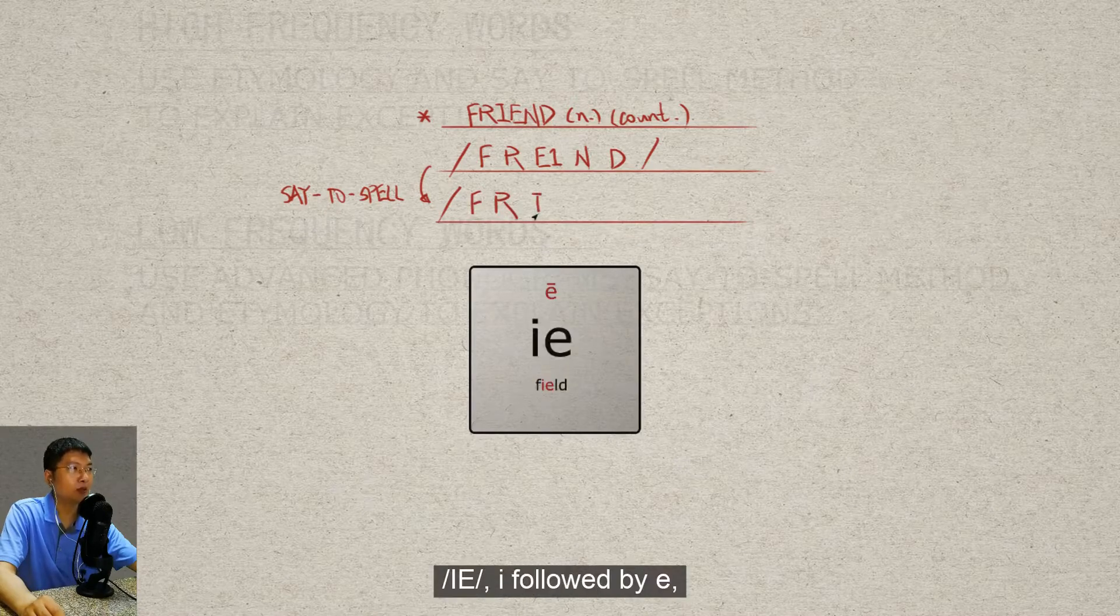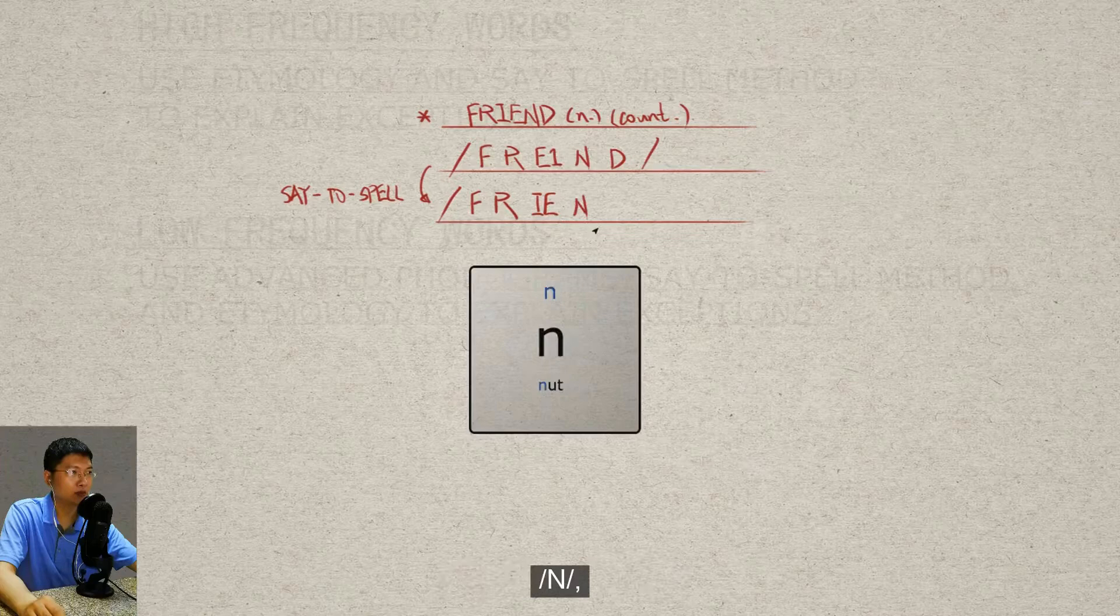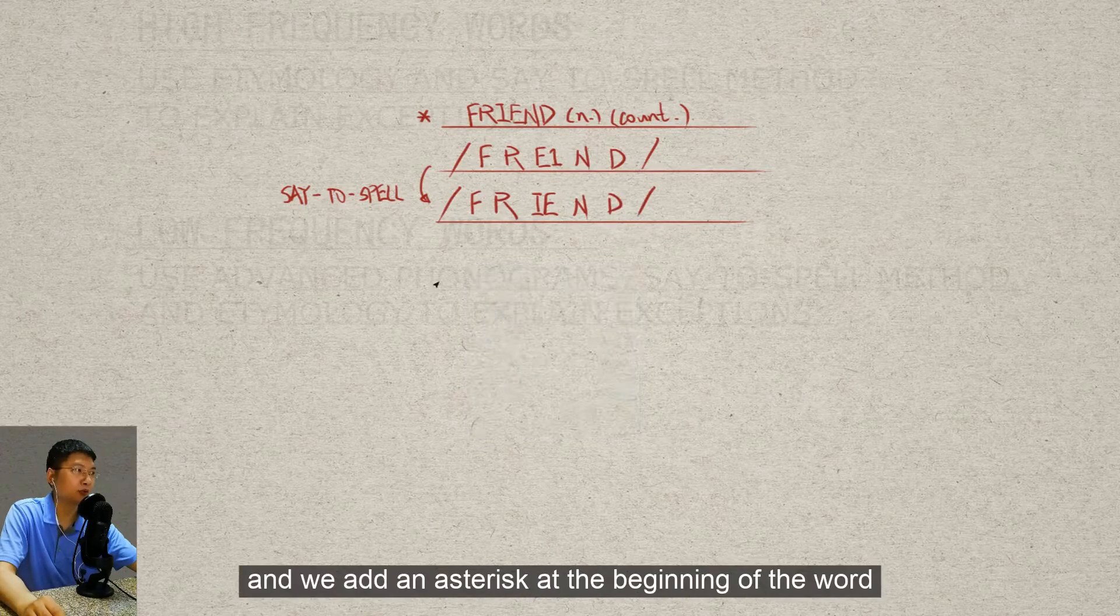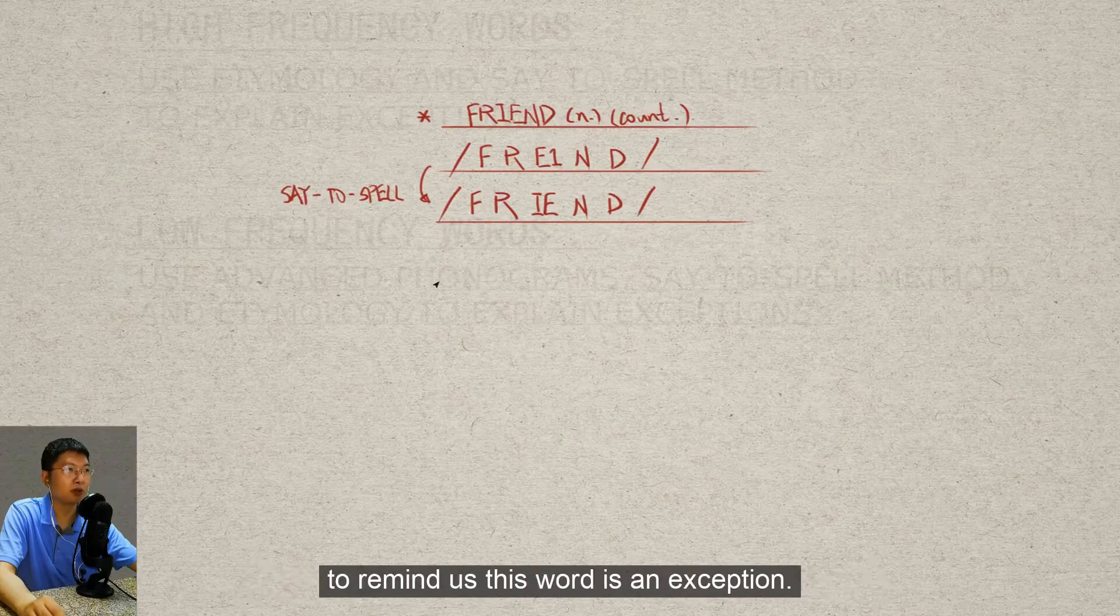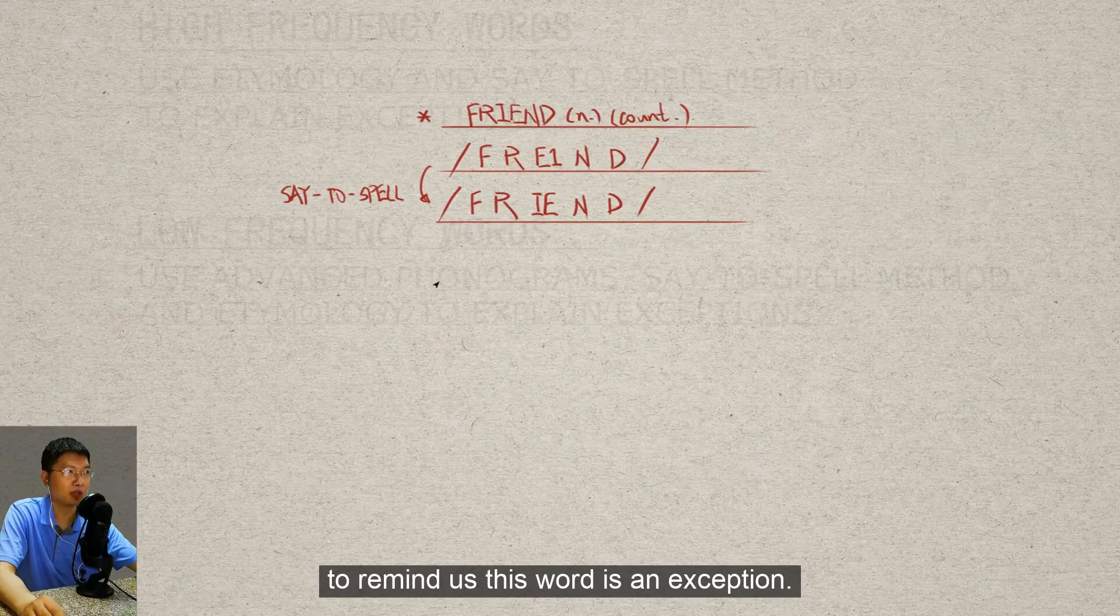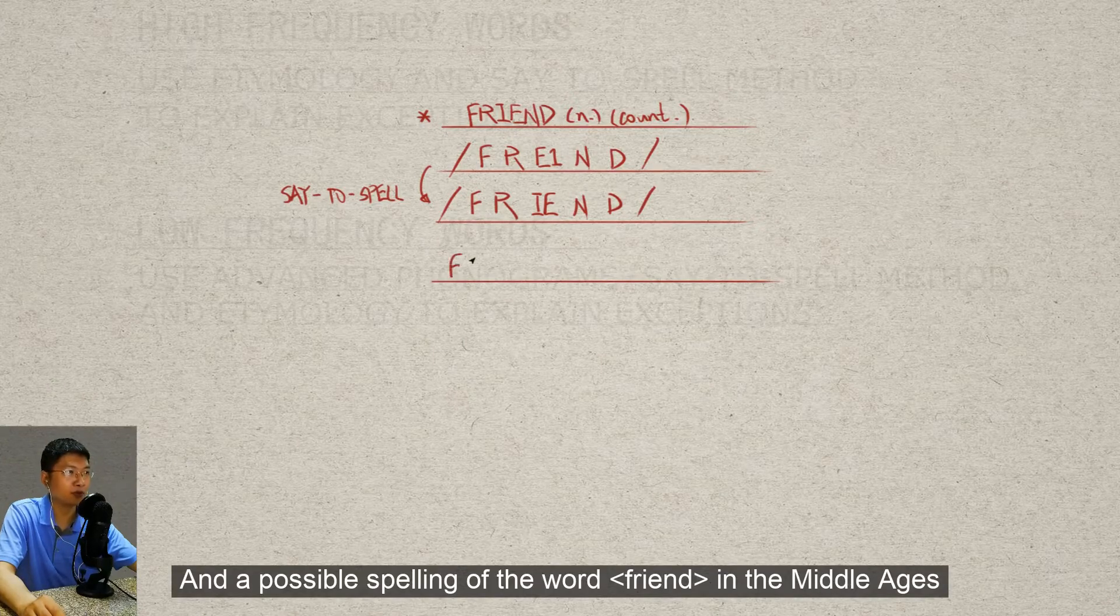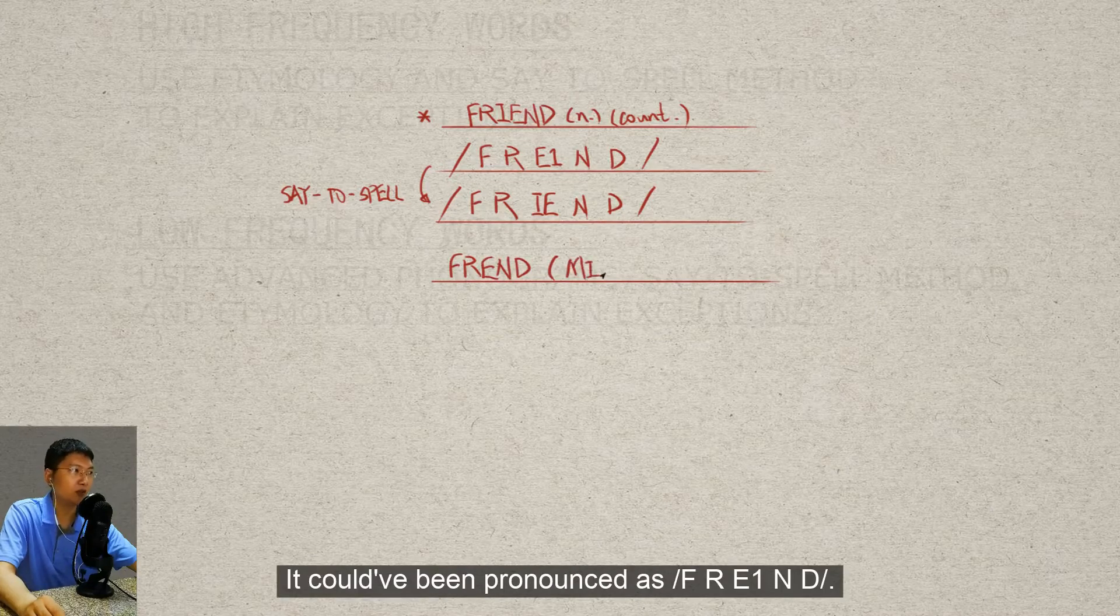We say 'friend' for spelling purposes: F-R-E-I-E-N-D. And we add an asterisk at the beginning of the word to remind us this word is an exception.